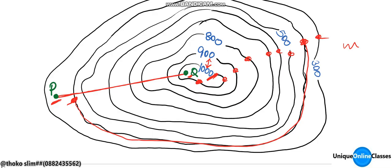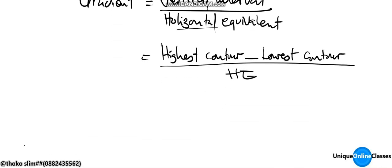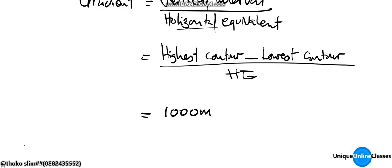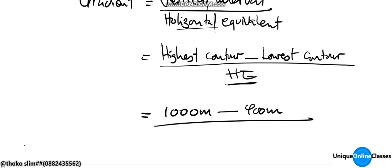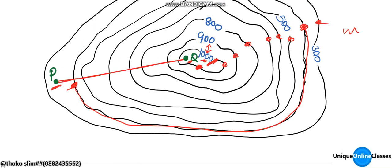Between point P and point Q, the highest contour is 1000 meters and the lowest contour is 400 meters. So the vertical interval is 1000 meters minus 400 meters, giving us 600 meters. Now we need to find the horizontal equivalent, which is the actual distance on the ground.